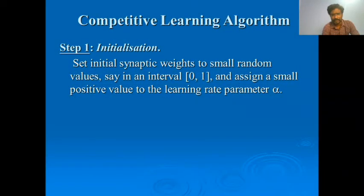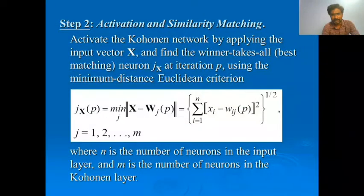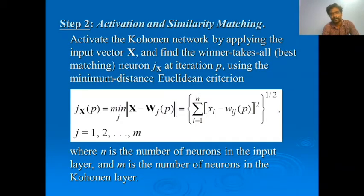The competitive learning algorithm involves several steps. Step 1 is initialization: initialize the synaptic weights to random values in the interval [0, 1] and assign small positive values to the learning rate parameter α. Step 2 is activation and similarity matching: activate the Kohonen network by applying input vector x and find the winner-takes-all neuron j(x) at iteration p using: j(x,p) = min_j |x − w_j(p)|.